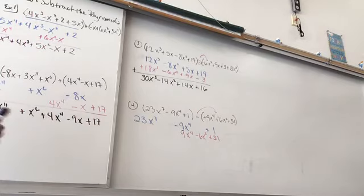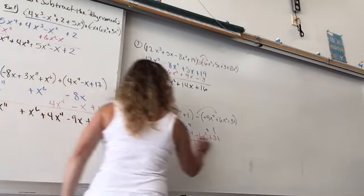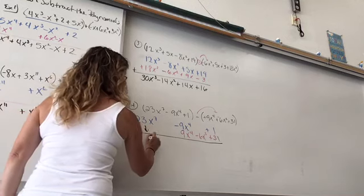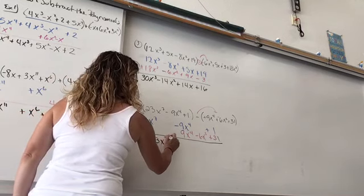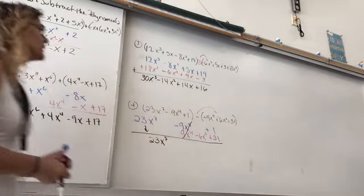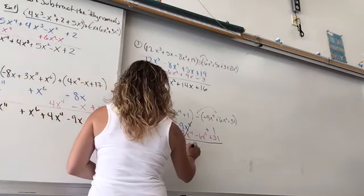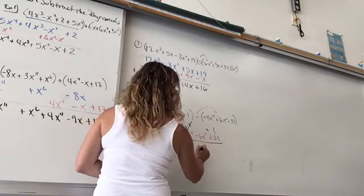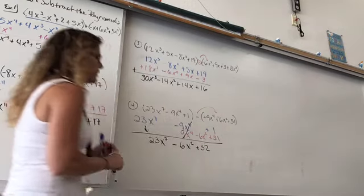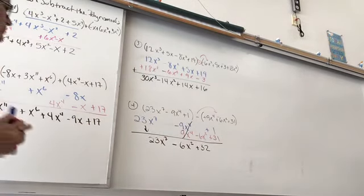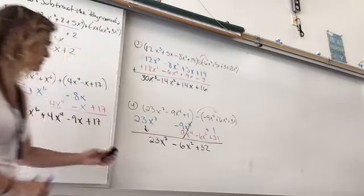Nothing got added underneath that 27, or 23x to the seventh, but that's okay, because it's going to drop down. Look at what happens there. Negative 9 plus 9 becomes a 0. So I have a minus 6x squared. 1 plus 31 is 32. And we've got our final answer. Make sure you take good notes.